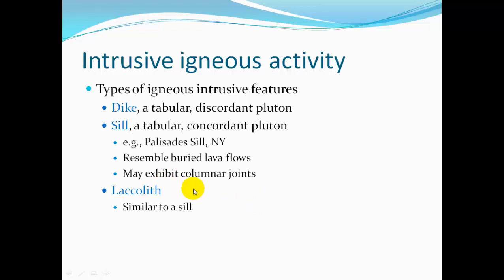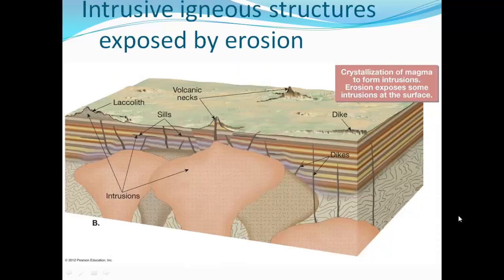A laccolith is similar to a sill, but has a circular top like a mushroom cap, and it pushes up the sedimentary layers above it. A diagram shows large plutons, an eroded laccolith with a mushroom-cap shape, sills parallel to the other rock layers, and dikes cutting across sedimentary layers. Here's an example of a sill in Arizona — igneous rock with sedimentary rock above and below it.